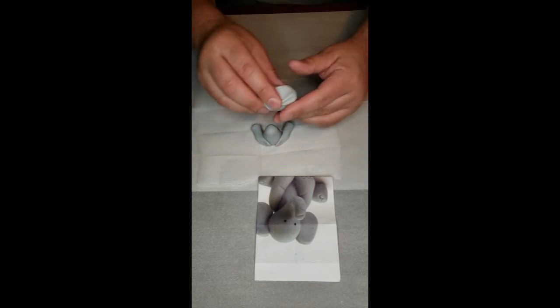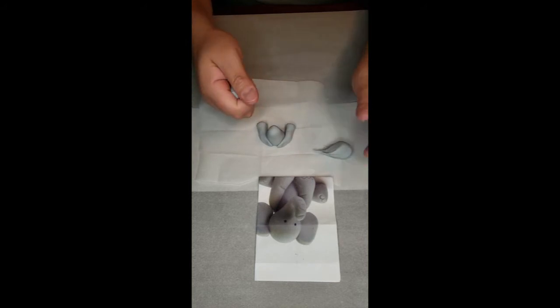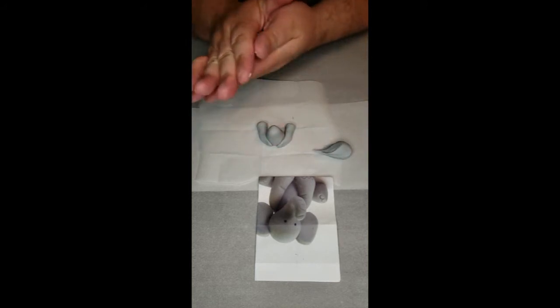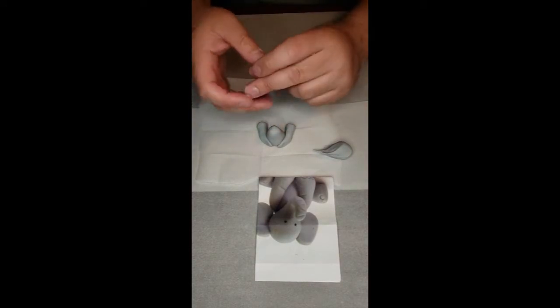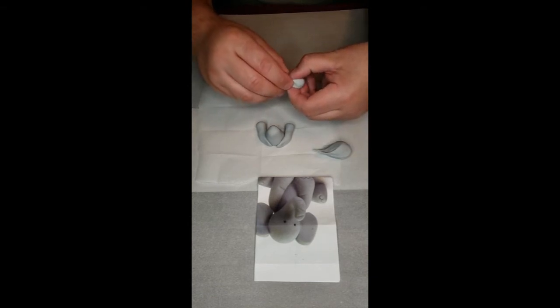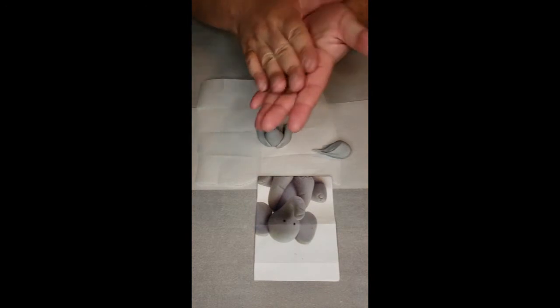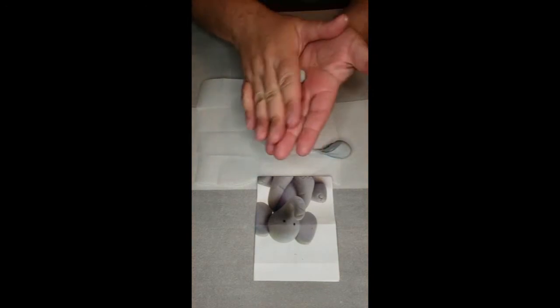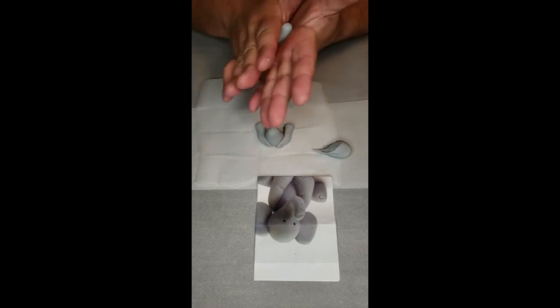Now I am going to get a piece enough so I am able to make the arms. Make it into a ball. Then I am going to divide it in half. And we are going to do the same thing but this one is going to be slightly thinner and a little longer.